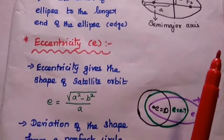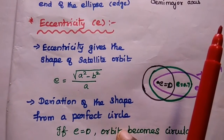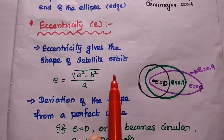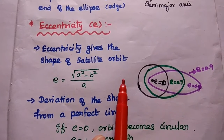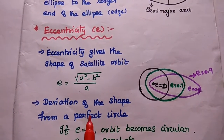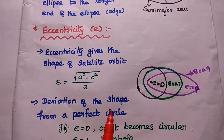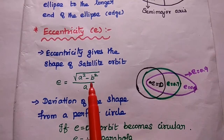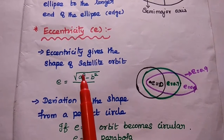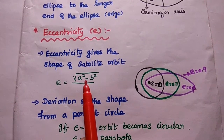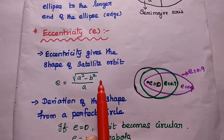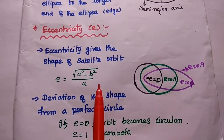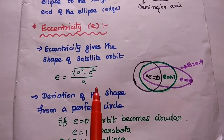The next element is eccentricity. Eccentricity is the orbital parameter which gives the shape of the satellite orbit — that is, the deviation of the shape from a perfect circle. It can be obtained from the formula: square root of (a squared minus b squared) divided by a, where a is the semi-major axis and b is the semi-minor axis. Based on this value, the shape of the satellite orbit is defined.